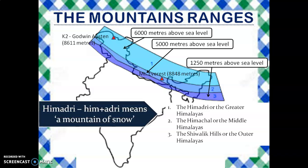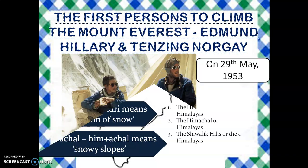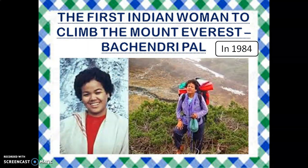Himadari is made up of two words: Him plus Adari. Since the temperature there is very cold, that area is permanently covered with snow throughout the year and it is known as a mountain of snow. Himachal is also made up of two words: Him plus Achal, which means snowy slope. The first persons to climb Mount Everest were Edmund Hillary, a New Zealander, and Tenzing Norgay, a Sherpa. They climbed Mount Everest on 29th May 1953. The first Indian woman to climb Mount Everest is Bachendri Pal in 1984.